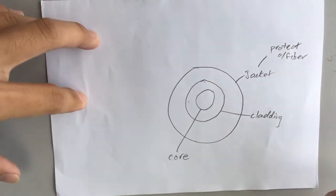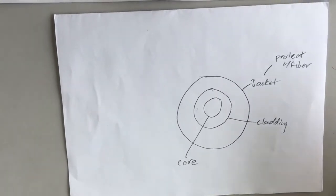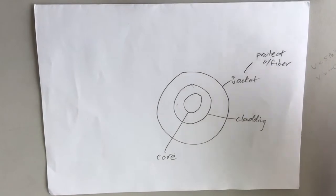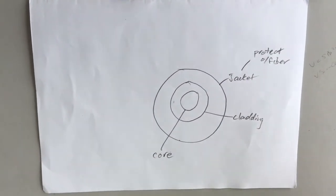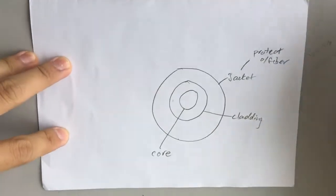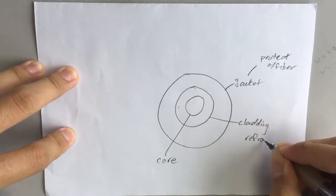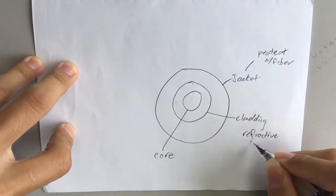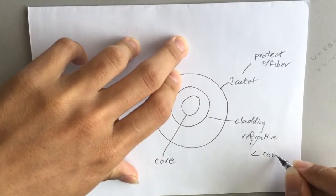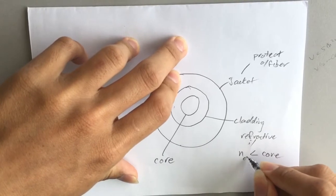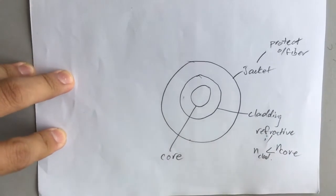And then the cladding, we can say that the main function of the cladding is to ensure that the light is able to transmit throughout the optical fiber. So from the theory view, the refractive index of the cladding must be lower than the refractive index of the core.